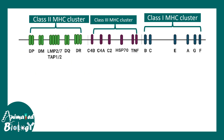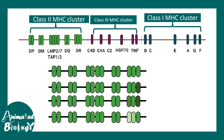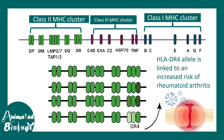MHC molecules are also important in the context of disease, for example autoimmune disorders. There are different allelic versions of HLA clusters — for instance, HLA Class 2 MHC molecules have diverse allelic forms, one of which is HLA-DR4. The HLA-DR4 isoform is very much associated with the risk of developing rheumatoid arthritis. There are a plethora of examples showing that specific allelic variants of HLA-DR and HLA-DQ are associated with the risk of autoimmune disorders.